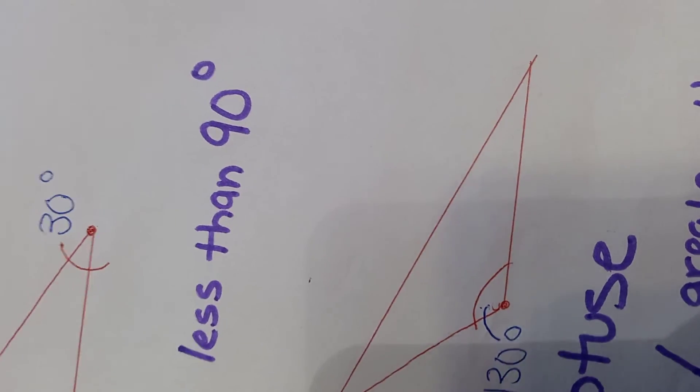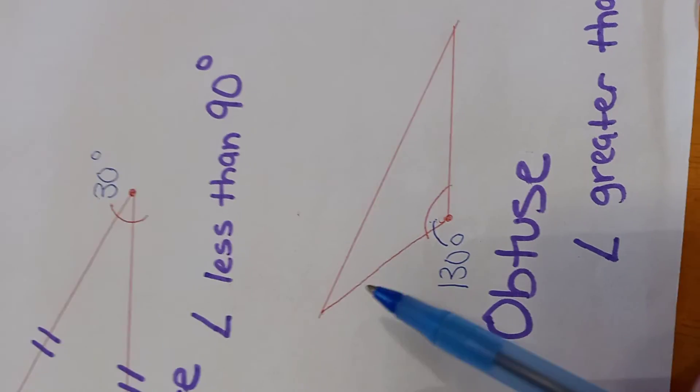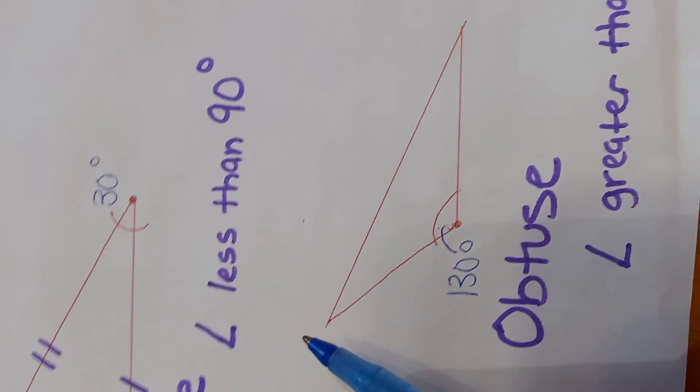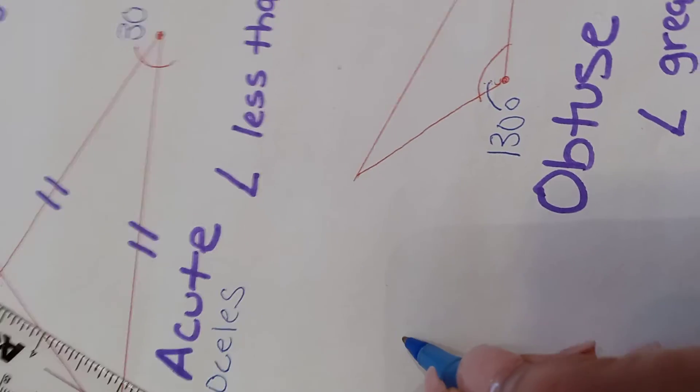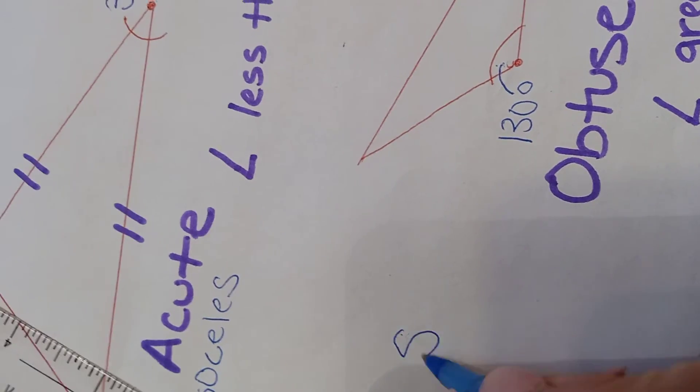And this is a scalene triangle, which means the sides are not equal to each other. And I'll spell it right here: scalene.